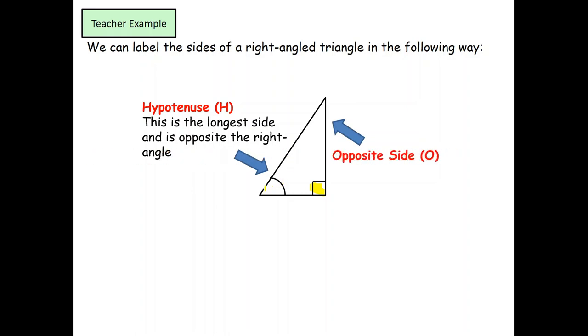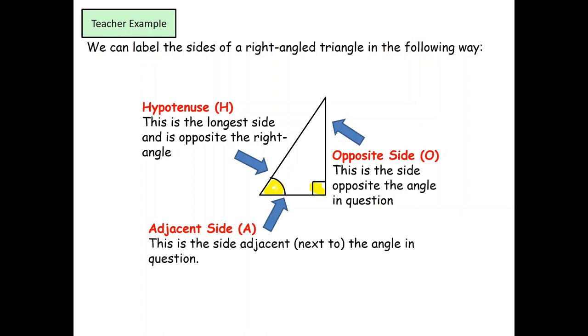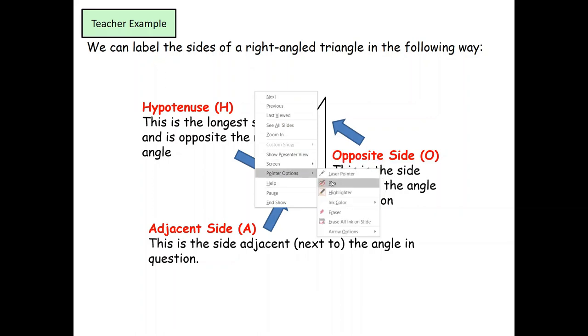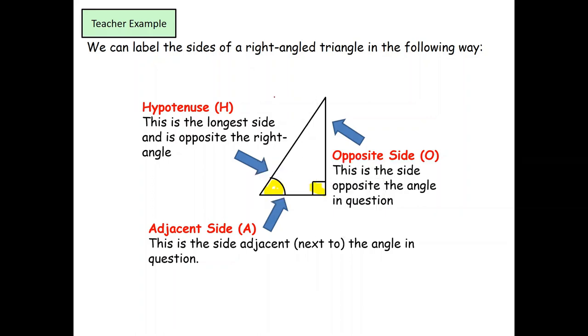This side here is known as opposite because it is opposite to the given angle in the question. And the last side is known as the adjacent. All you need to know about the adjacent is that it's next to the angle. So, what we label up first is the hypotenuse, then the opposite, and finally the adjacent side.